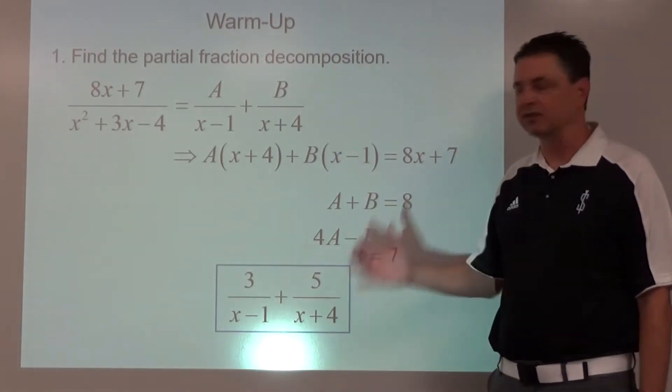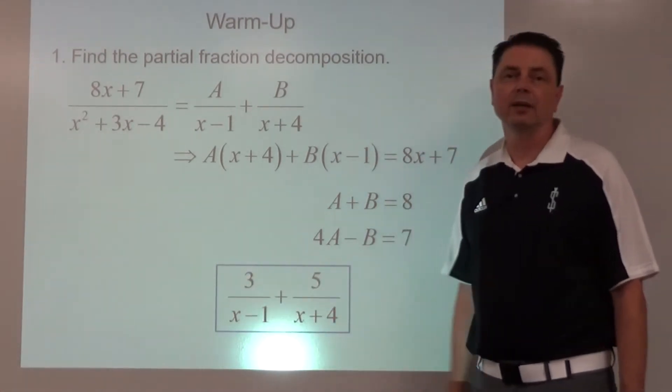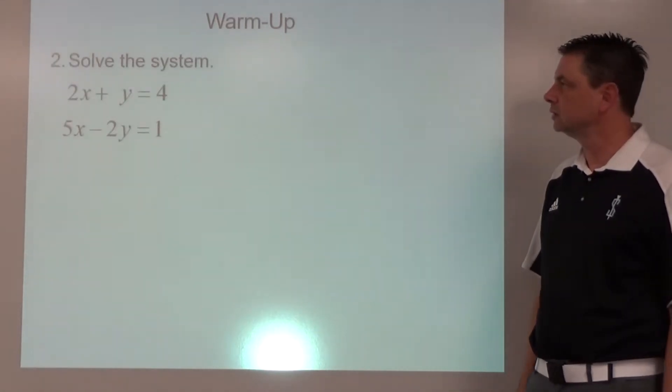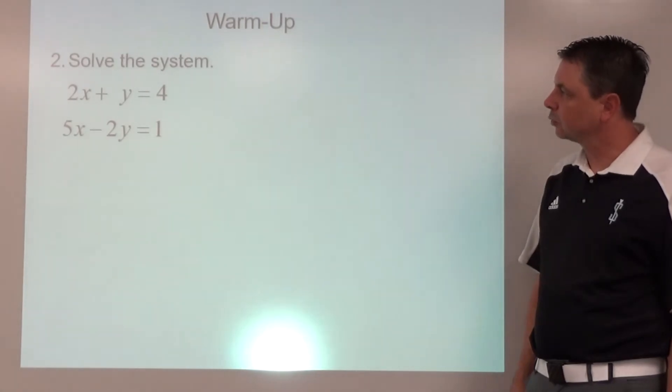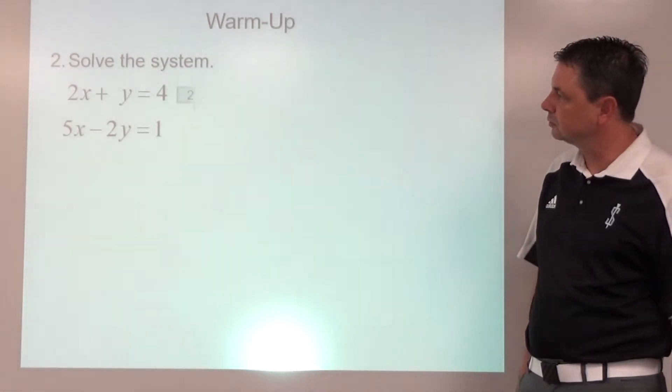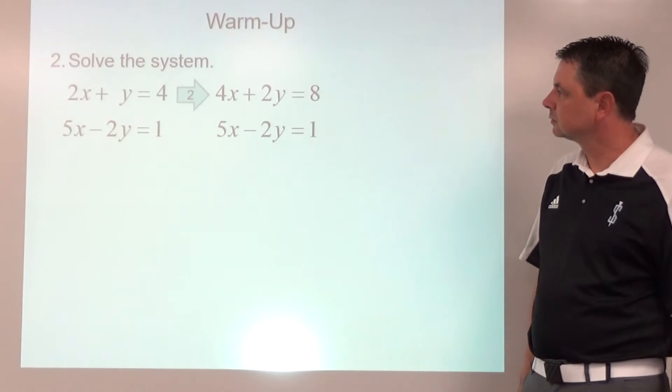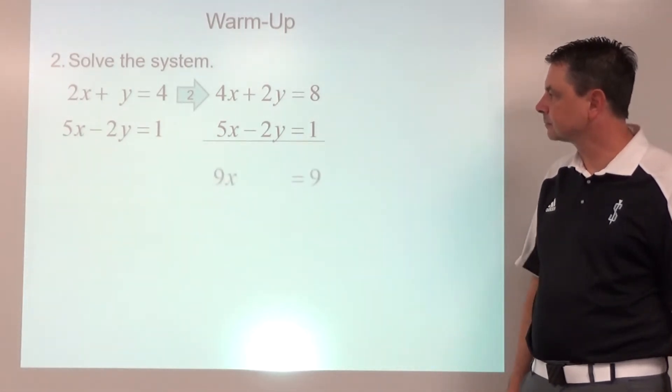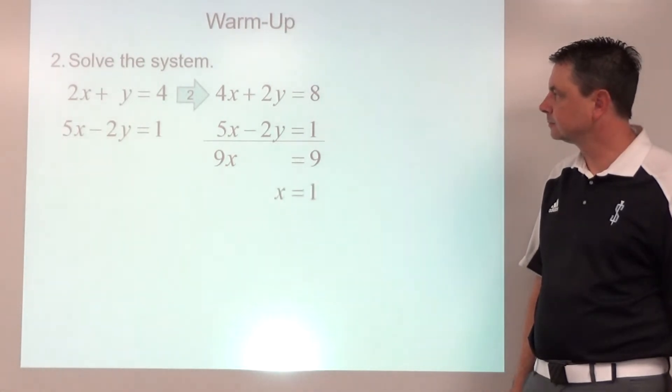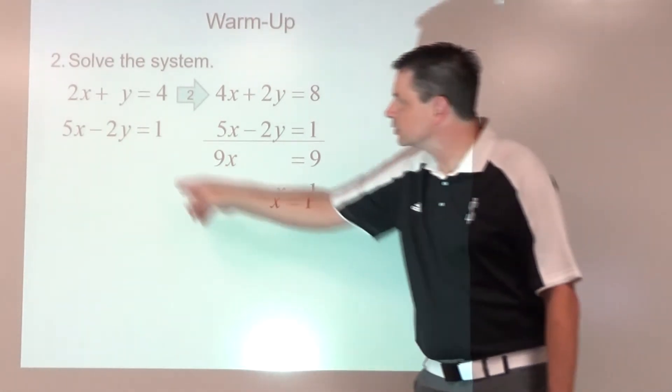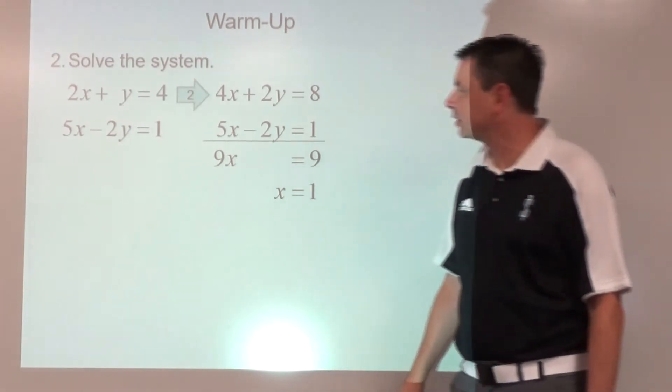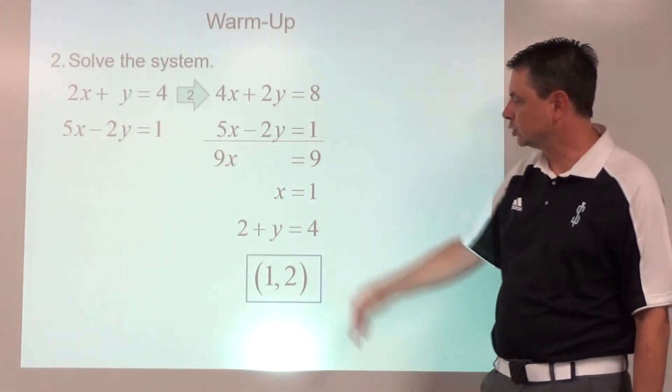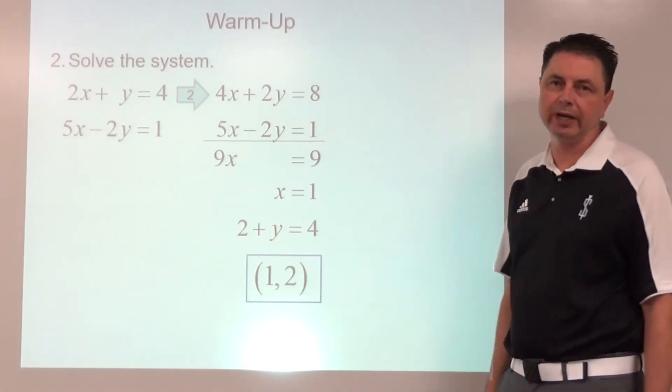Problem number two, solve the system. We can multiply the top equation by 2, so we get 9x is equal to 9, x equals 1. Substitute that back in and we get y equals 2. So our solution, x equals 1, y equals 2, we write as an ordered pair.